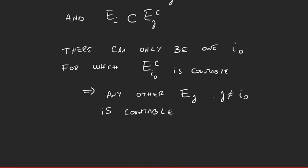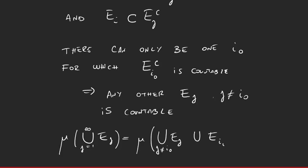And so when we calculate mu of the union over all the elements, this union we can just split it into two. We have the union over all the ones that are different from this i0, and then just add E sub i0. But now we have that this union, because all of these are countable, this is a countable union. And then the E sub i0, its complement is countable, so this one is uncountable.